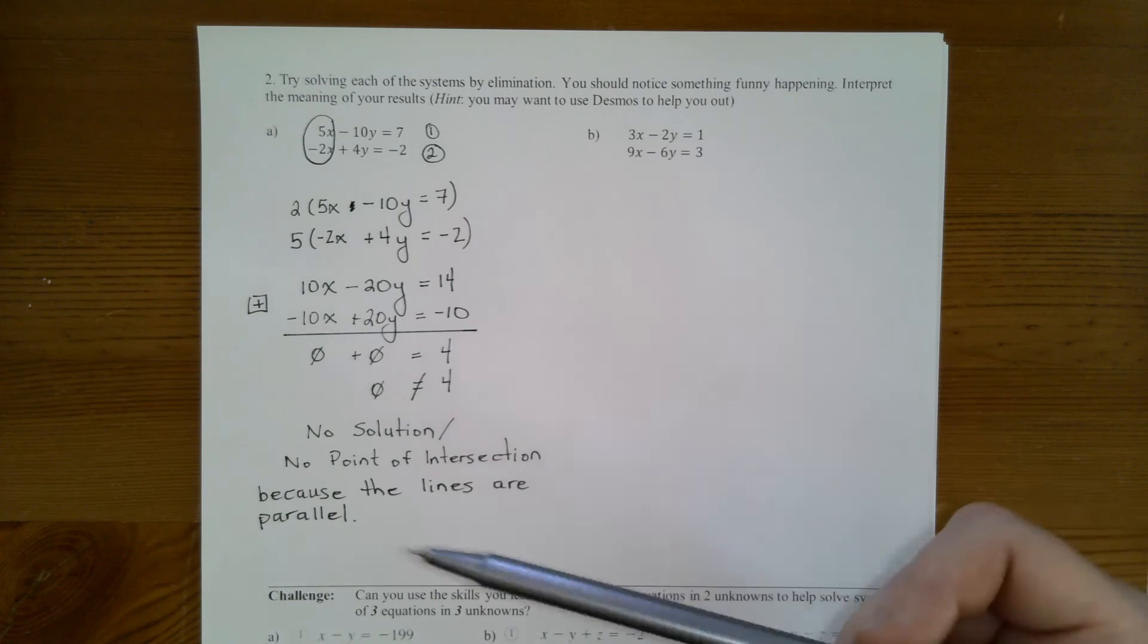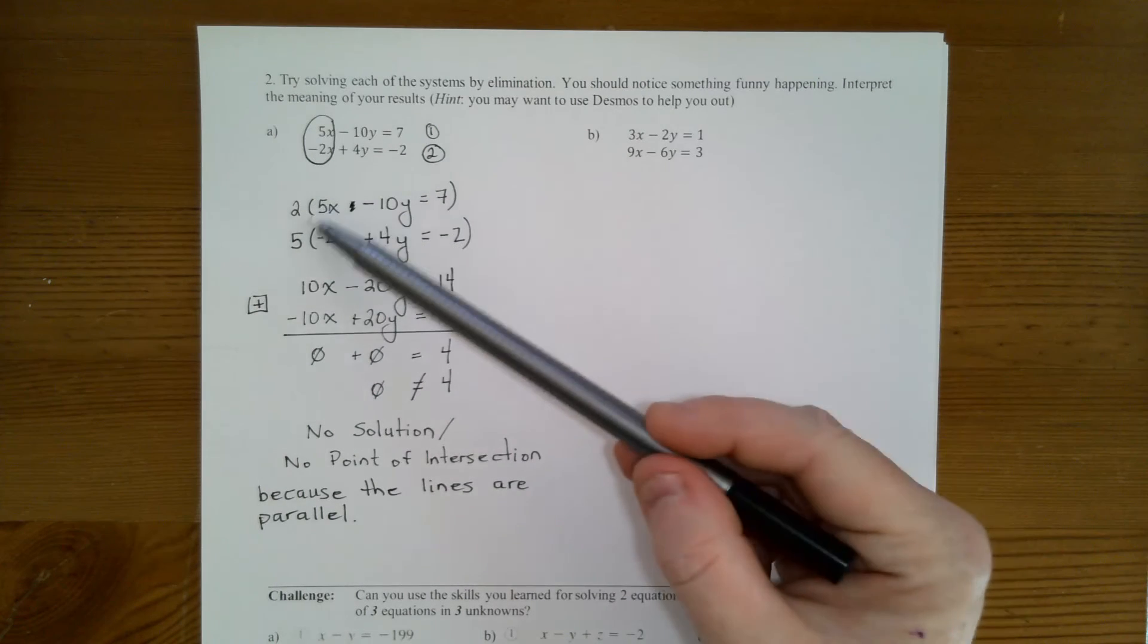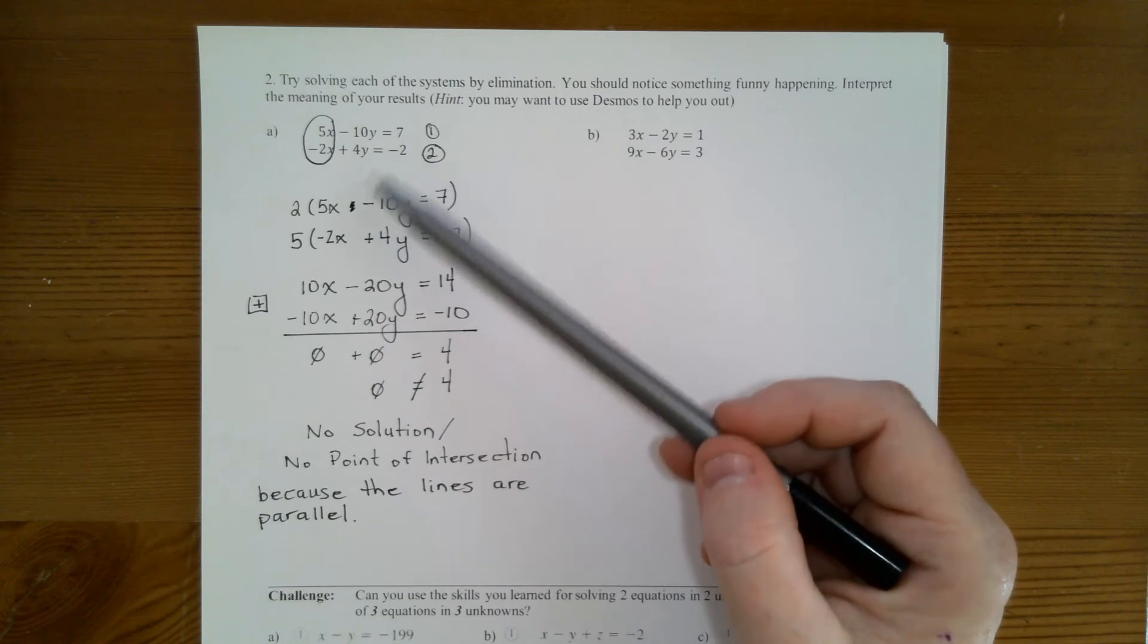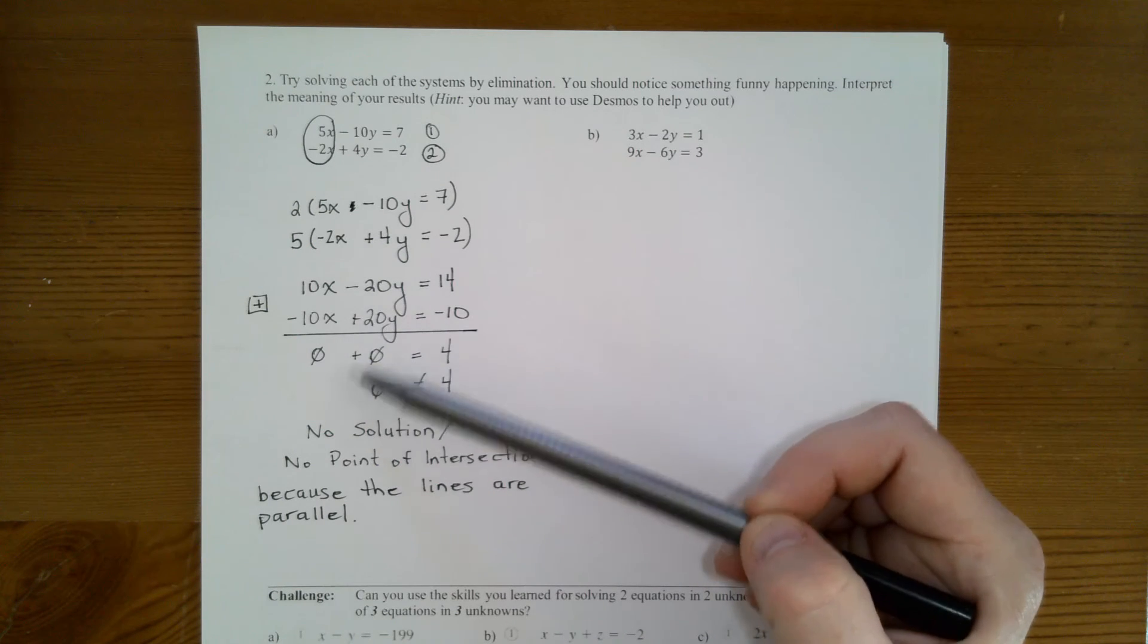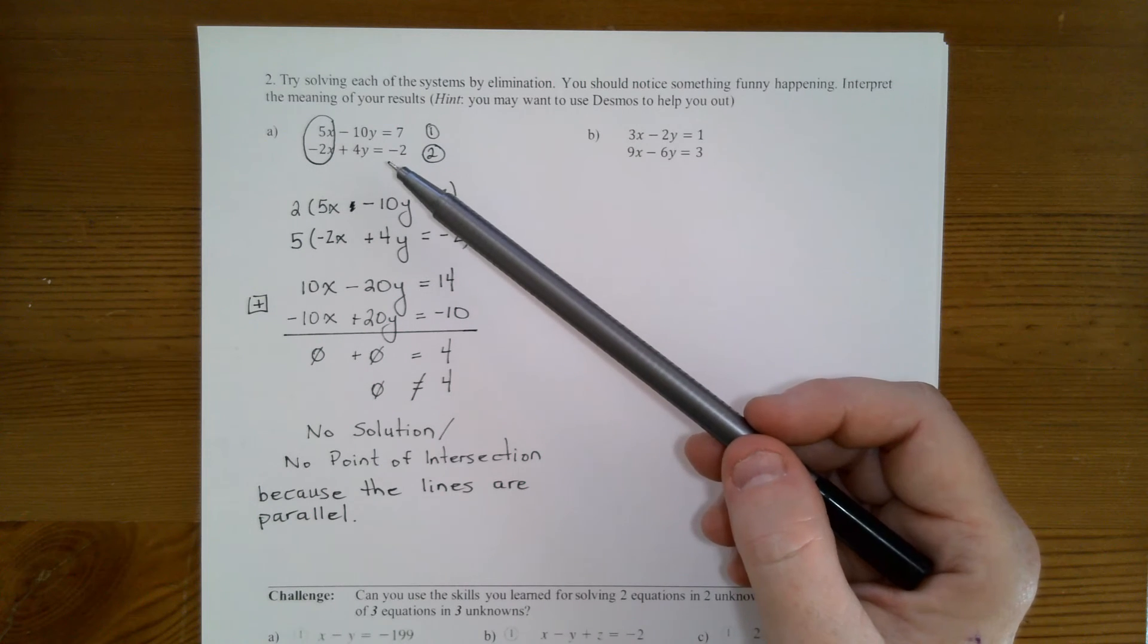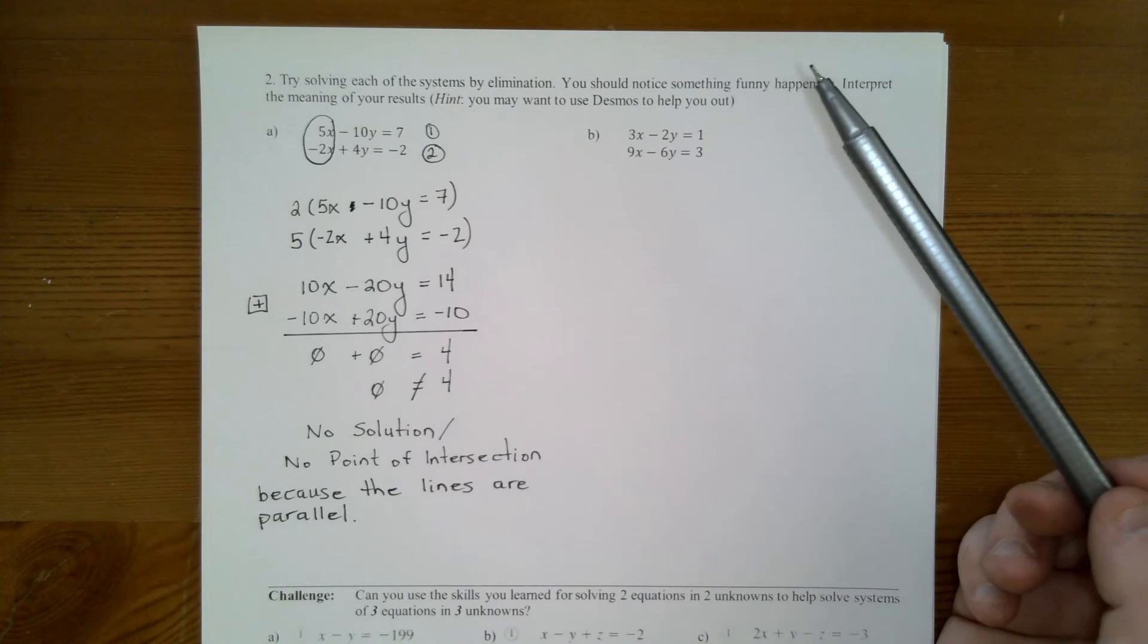So I would like you to just take a look at this and see how you could tell, without going through this step of adding and subtracting, just by looking at these two equations. How can you tell that they're going to be parallel before you even get started?